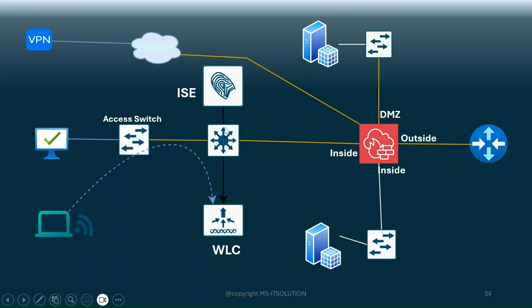But since now we have Cisco Identity Services Engine, what it implements is: before giving you access, you have to prove who you are, where you are going, and which location you are connecting from. All these features we can enable through Cisco ISE so that you can secure your border or access network. Before your traffic traverses the entire network, you can control your traffic and which users connect to your network. This is why we call it a network access control server.